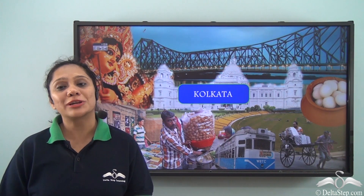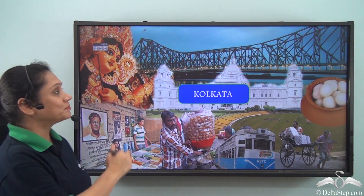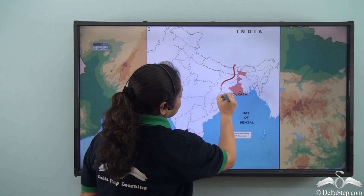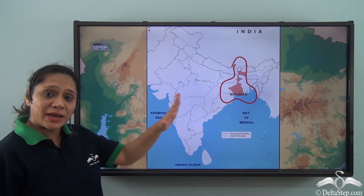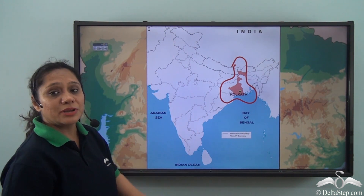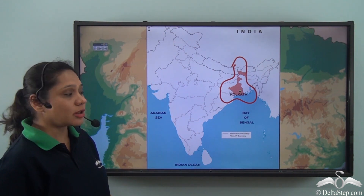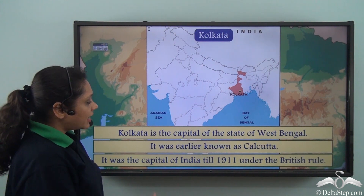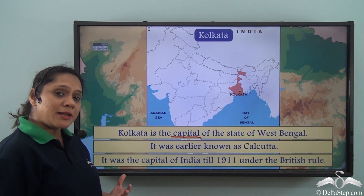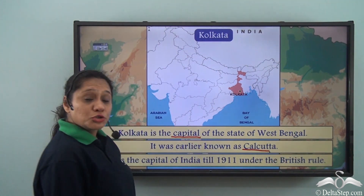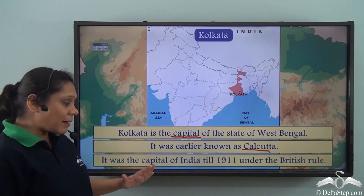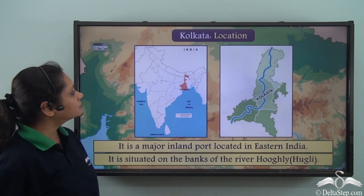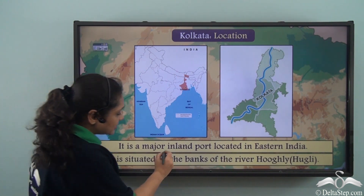Let us talk today about Kolkata, the City of Joy. This is the map of our country India, and the shaded part in the eastern part of our country is the state of West Bengal. Kolkata lies in the state of West Bengal; in fact, it is the capital of this state. Earlier it was known as Calcutta. Do you know that it was the capital of India till 1911 under the British rule?